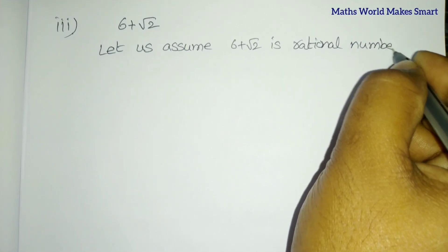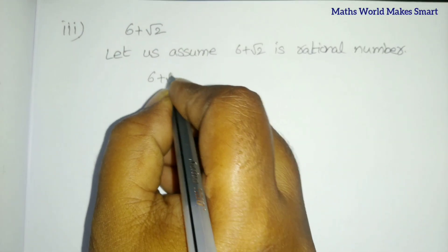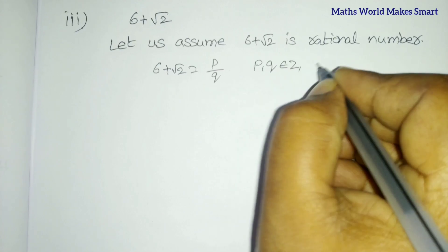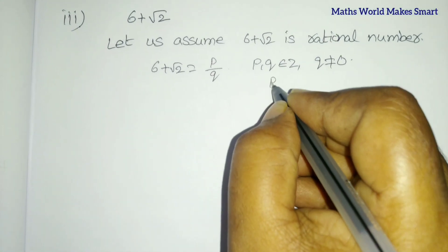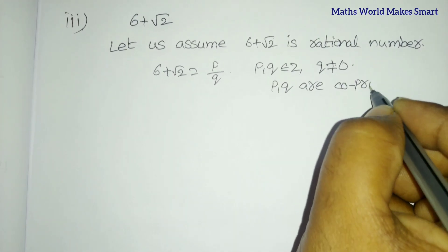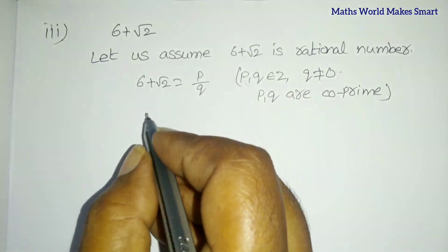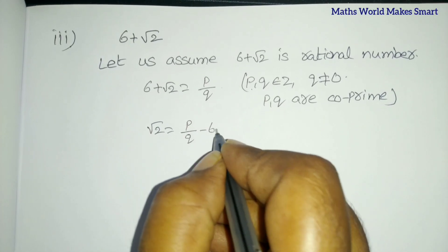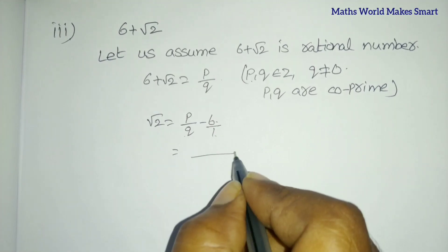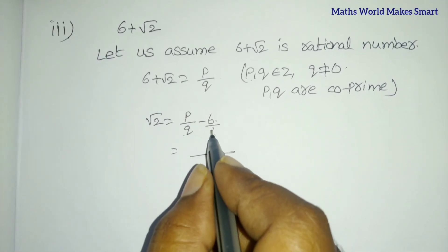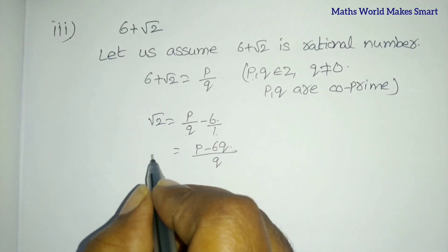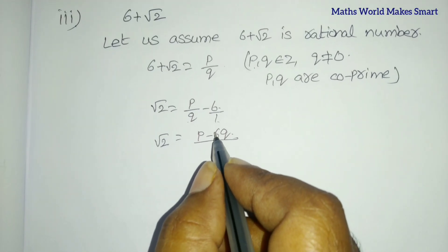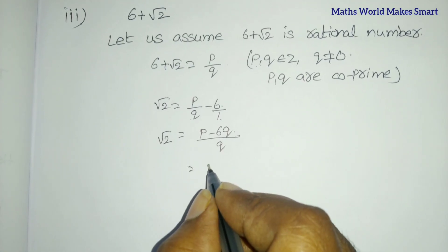By the rational number definition using the P by Q formula, 6 plus root 2 equals P by Q, where P and Q are integers and Q is not equal to 0. Rearranging, root 2 equals P by Q minus 6, which gives root 2 equals P minus 6Q divided by Q. Since P and Q are integers, the expression P minus 6Q by Q is a rational number.